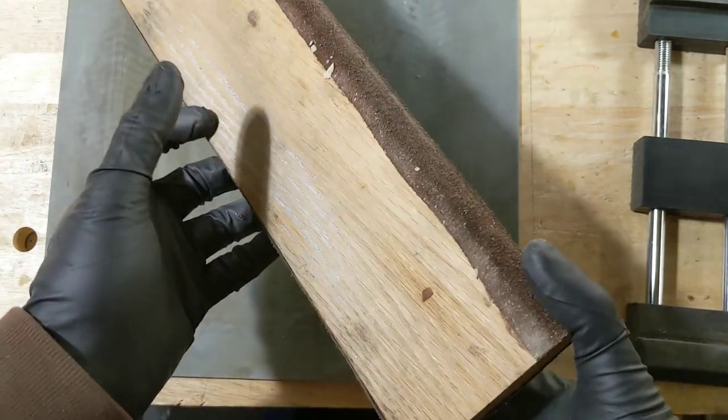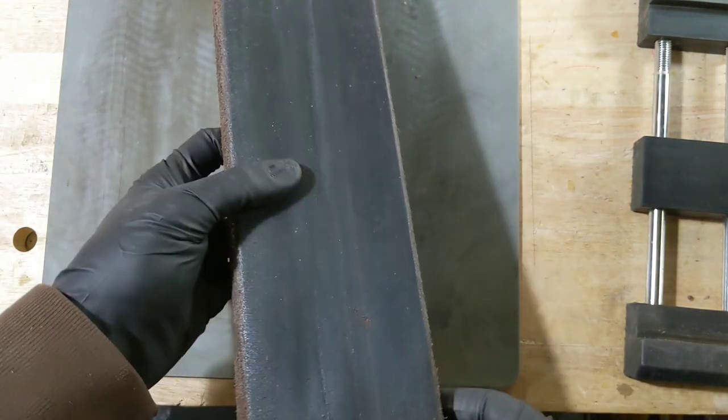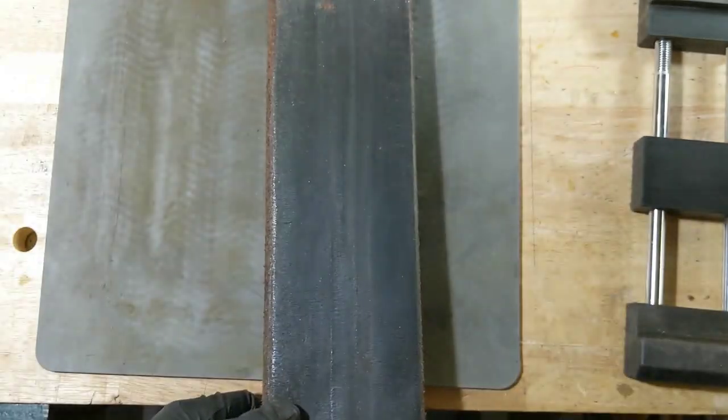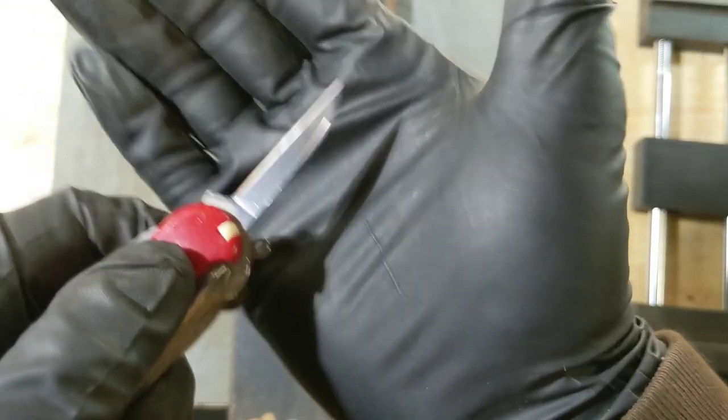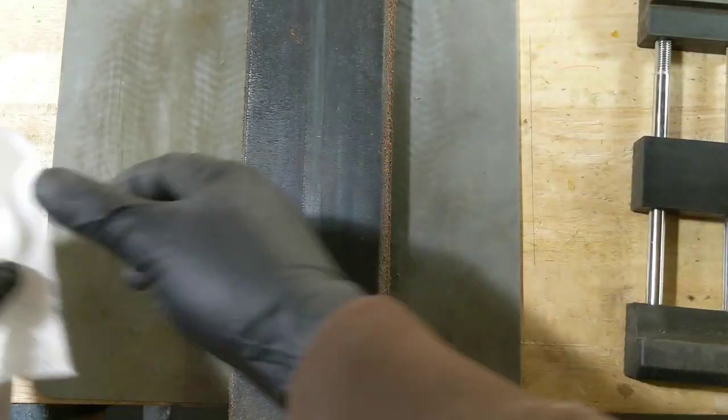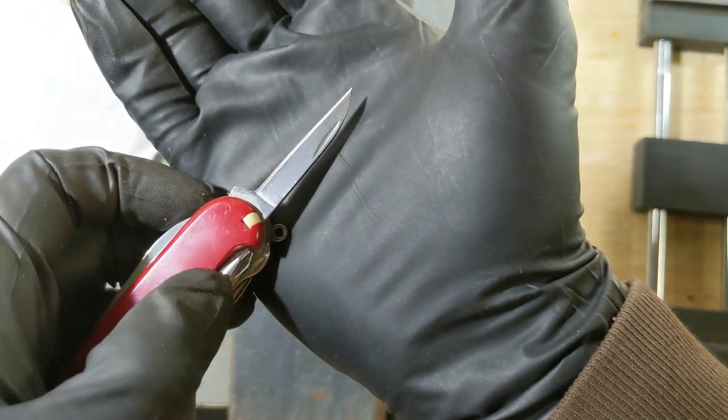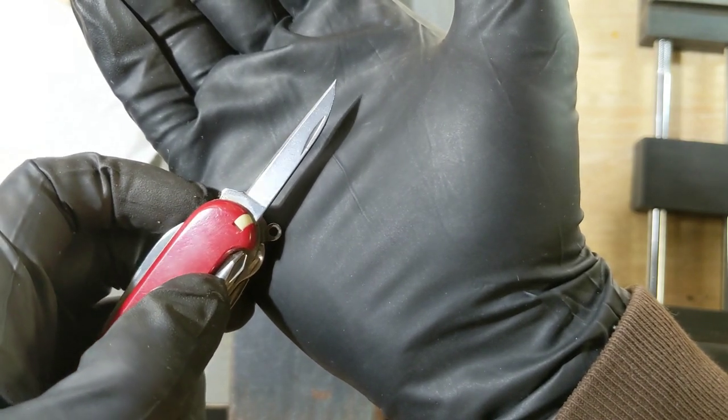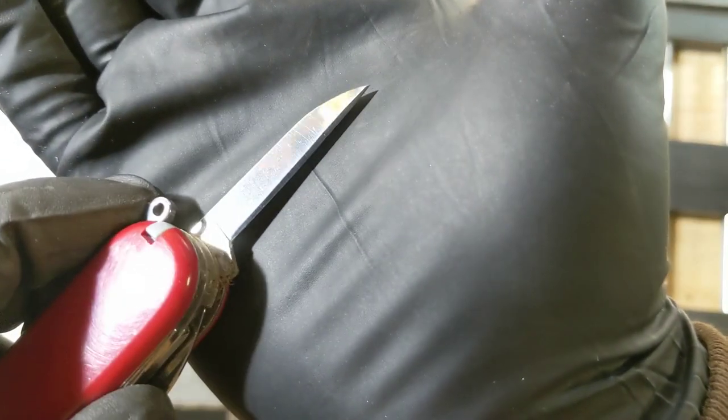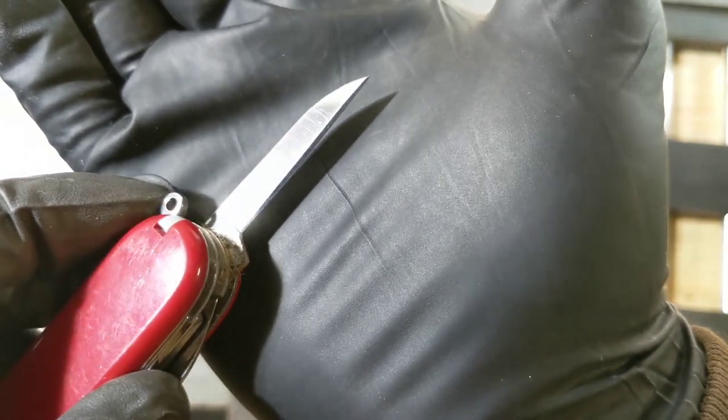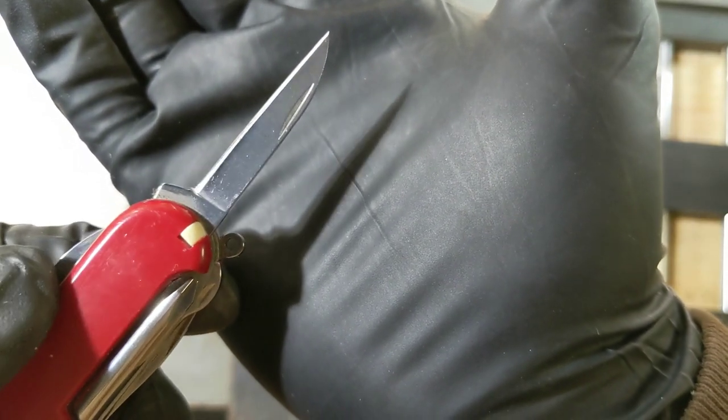So here's my strop. Nothing fancy. It's just a piece of oak with a bit of thrift store leather jacket. Leather glued to it. With some polishing compound. Alright, so I think it's safe to say we're done with the strop. And you can tell because that edge no longer has that burr on it. And it's nice and polished. It doesn't catch the light like it did on the tip anymore. I could keep going and polish it even more. But at some point, I think you hit diminishing returns.